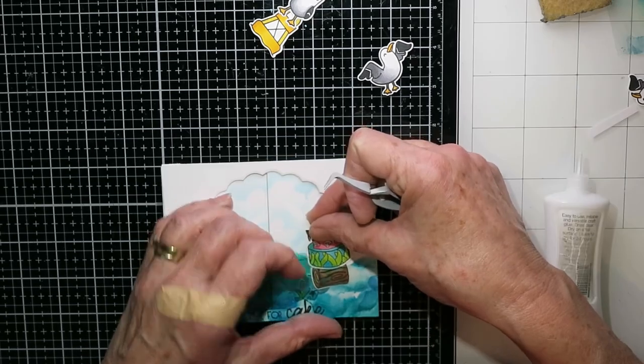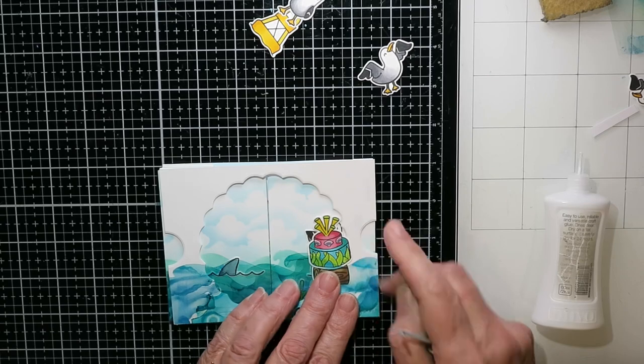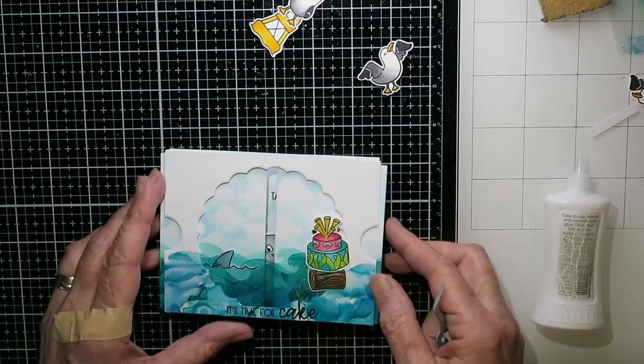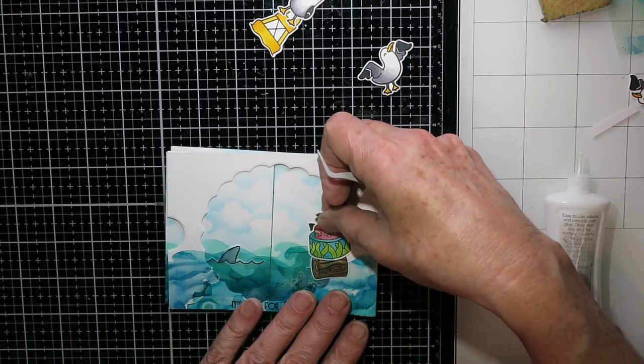And when you put anything on this inside front, just make sure you're only gluing to the edge and that none of the glue is going behind because you'll glue the whole thing down, obviously.